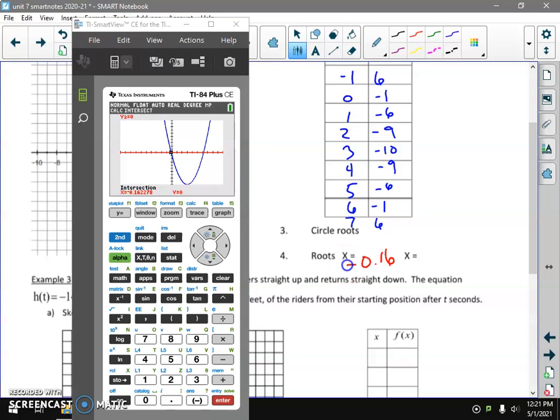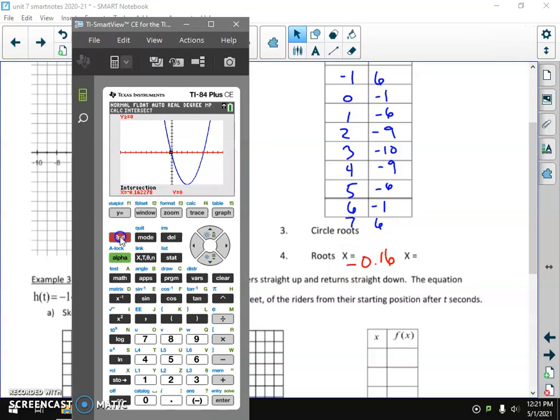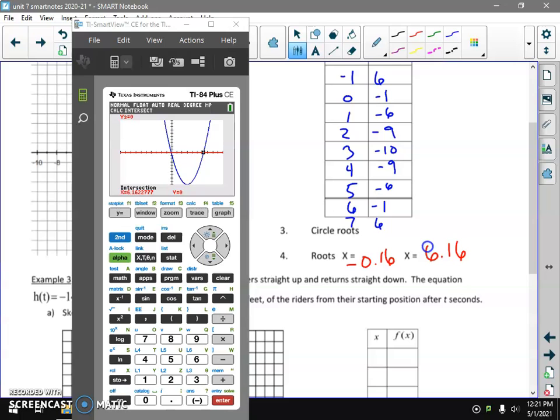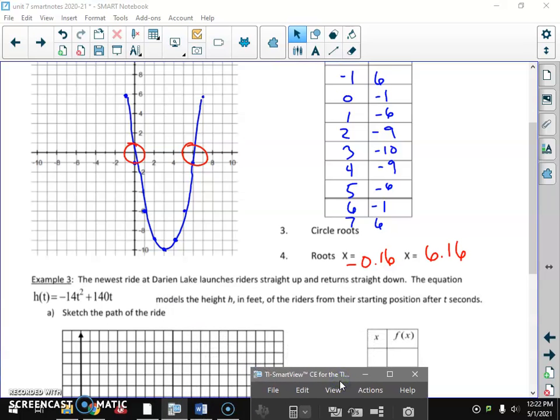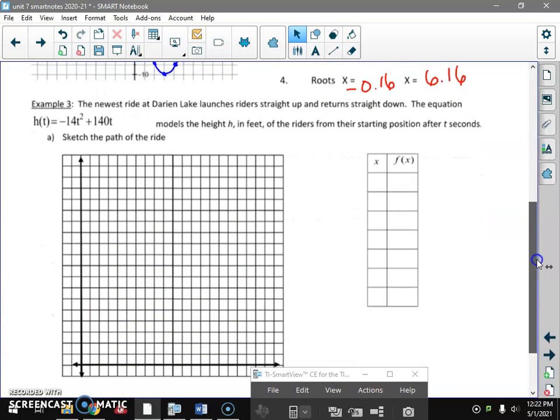Negative 0.16, that two is going to make it stay the same. Let's find the second one. Second, trace, five. Let's move our spider over. Enter, enter, enter. The second is 6.16. And like we said, the decimals are sometimes the same, sometimes they're a little different. Graphed it, found the table, plotted them, found the roots, use the calculator.